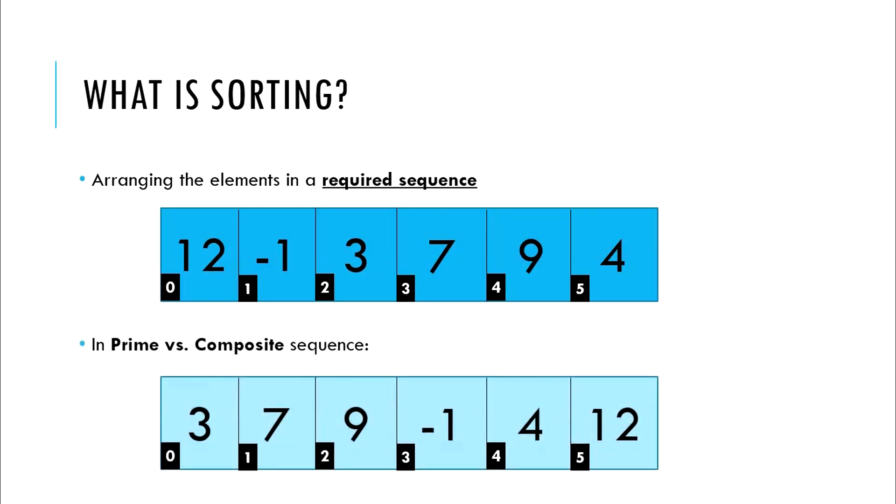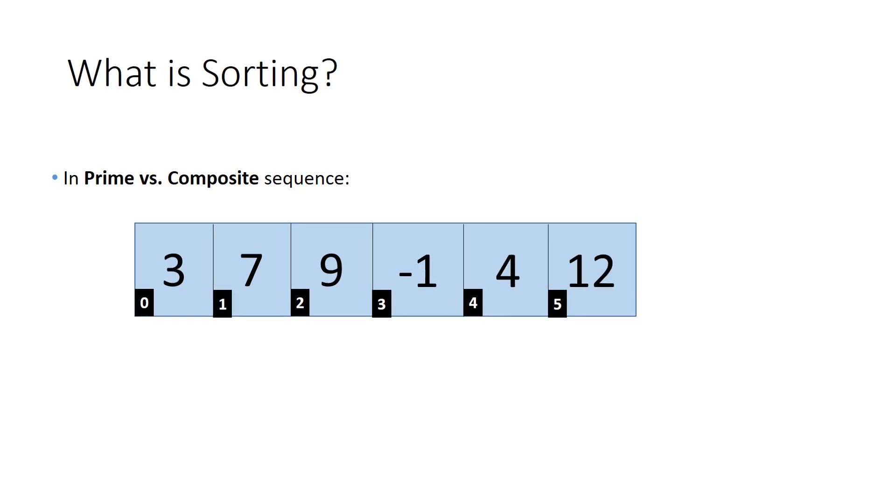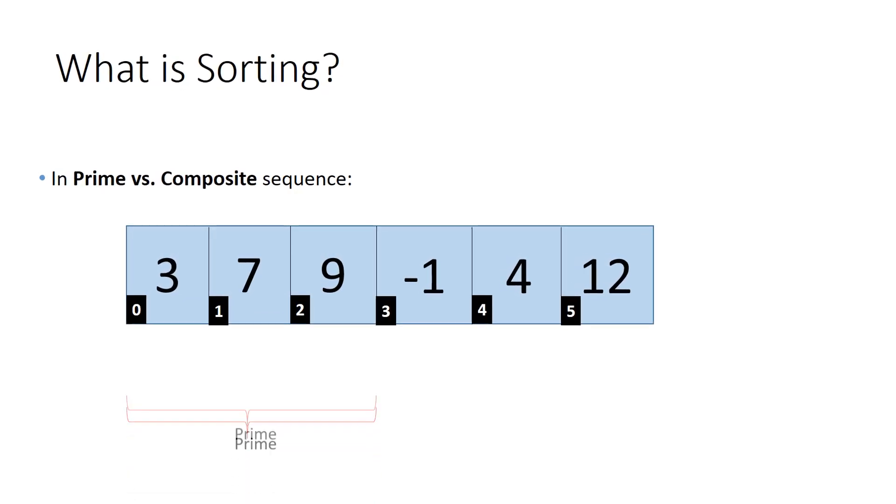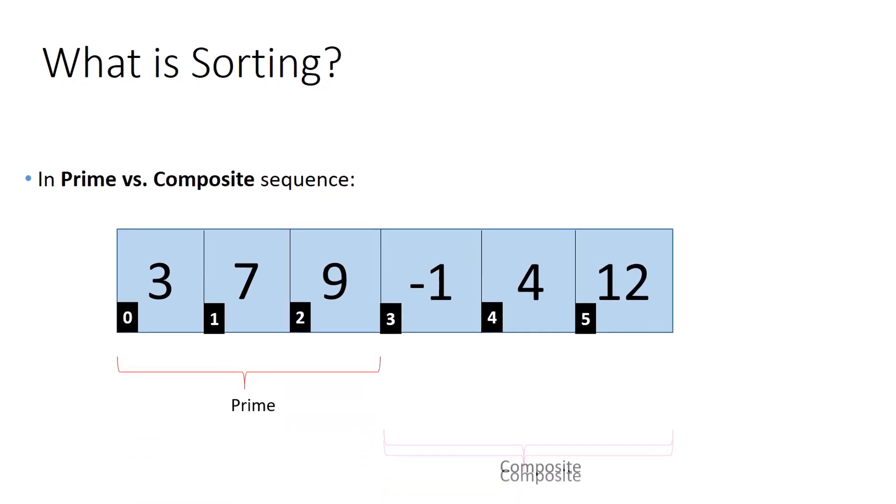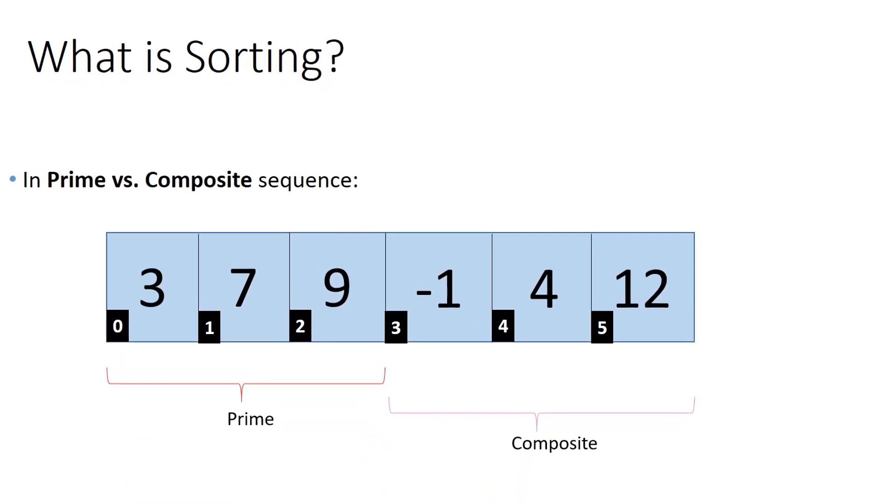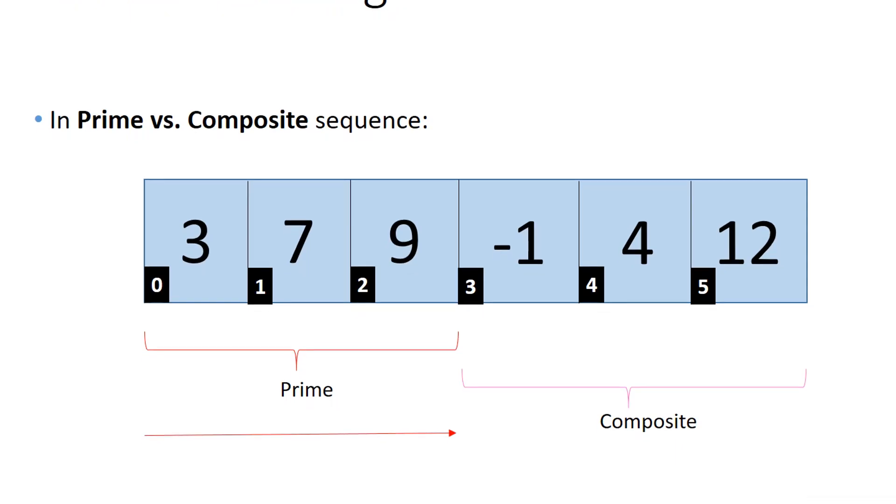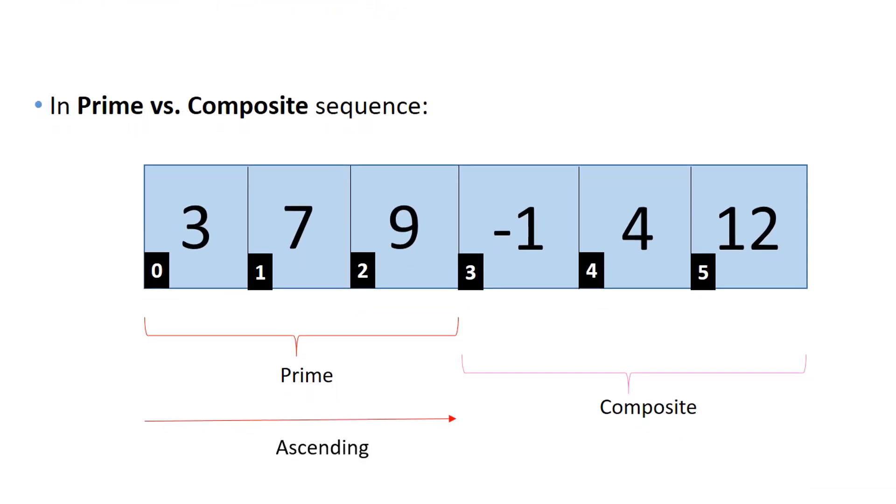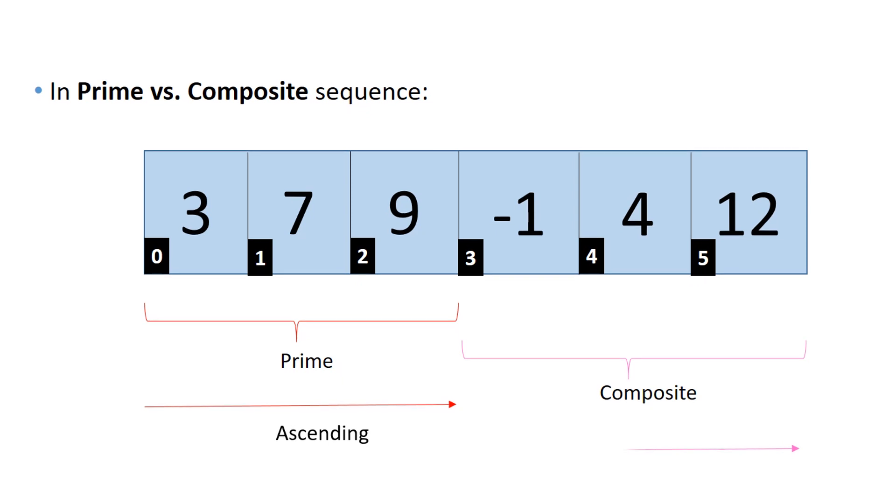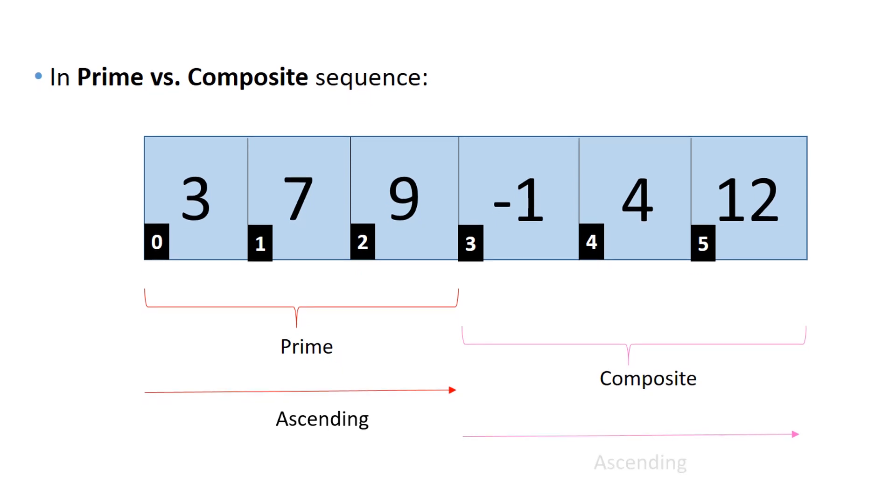It gets a little interesting if we were to sort these numbers in prime versus composite sequence. The idea is, we would like to put the prime numbers towards the beginning of the array, and the composite numbers towards the end. But note that we have three prime numbers and three composite numbers. Among these prime numbers and these composite numbers, we have applied a secondary sorting condition. We have sorted the prime numbers in ascending order of their magnitude, and composite numbers in ascending order of their magnitude too.